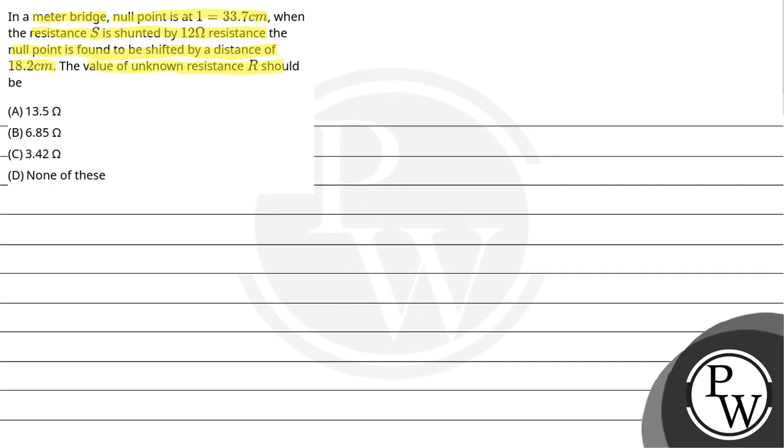The value of unknown resistance R should be: option A, 13.5 ohm; option B, 6.85 ohm; option C, 3.42 ohm.